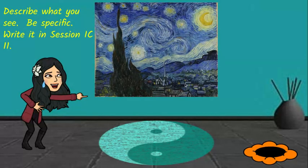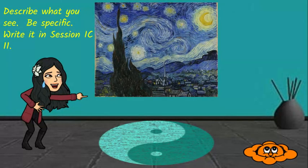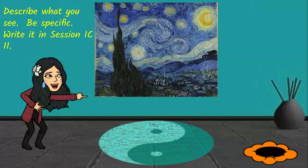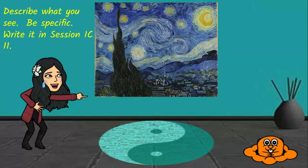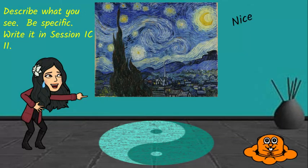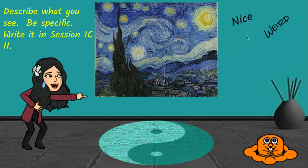Welcome back. This is Vincent van Gogh's famous painting called Starry Night — actually one of my favorite paintings of all time. I'm going to make a prediction about what some of you wrote down: you probably wrote it's a nice painting, some of you may have written it's weird, some of you may have said it's colorful, and some of you might have said there are swirls.